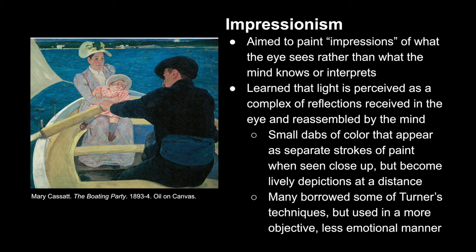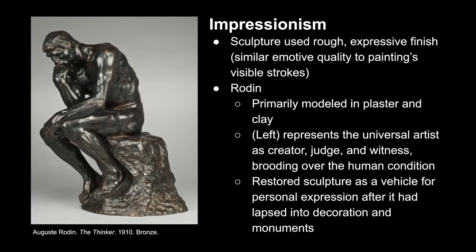The Impressionists had advanced knowledge about light, acknowledging that it is a complex of reflections received and perceived by the human eye before being reassembled by the mind, forming a visual and conceptual understanding of the subject. In order to capture this within paint, they utilize small dabs of color that were identifiable as individual strokes up close, but when the viewer backed away, the image would have lots of colored dimension looking bright and lively. Some Impressionists borrowed from Turner's painterly techniques, but used them in a more objective and less emotional manner. Impressionism was not confined to painting — sculptures also utilized rough and expressive finishes, similar to the emotive quality of a painterly approach with visible brush strokes.